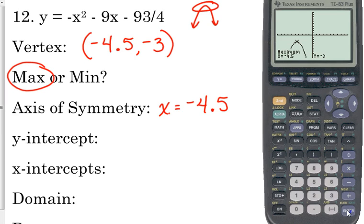The y-intercept, I don't need the calculator for it. The y-intercept is always the constant on the end, so the x is always 0, because we're talking about the y-intercept, so it has a y-coordinate. It does not have an x, and it's negative 93 over 4.